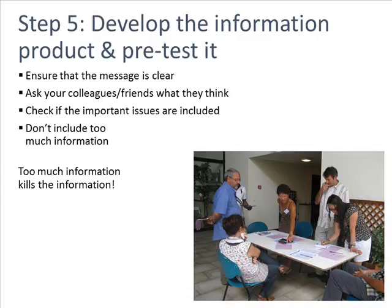Step 5 is to develop the information product and pre-test it. Ensure that the message is clear. You can ask colleagues or friends what they think before publishing. Check that the important issues are included, and remember — you don't need to include too much information. Too much information kills the information.